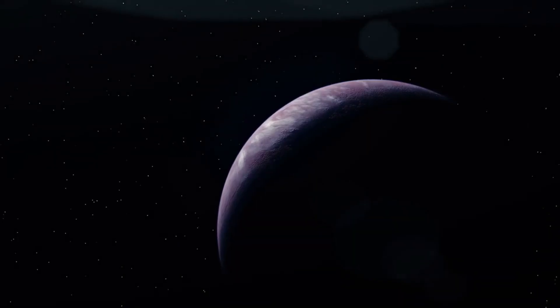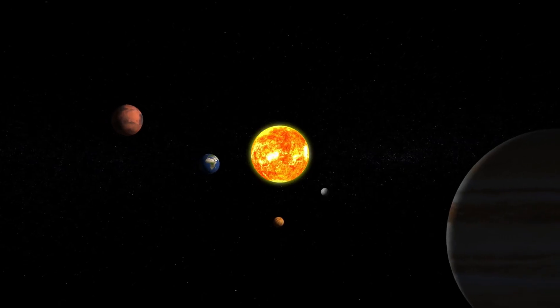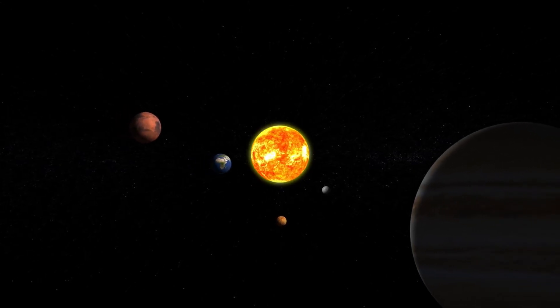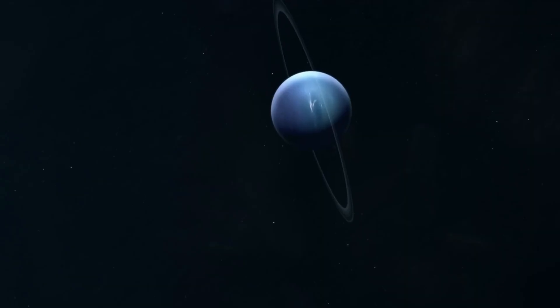The idea of a hidden planet isn't new. For over a century, scientists have speculated that our solar system may have more members than we can see. In the 1800s, Neptune itself was discovered due to its gravitational effects on Uranus. The Planet Nine story begins much more recently.